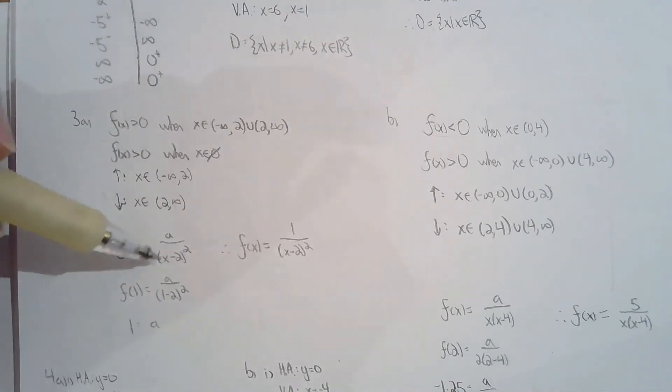Now for this one, 3a, the factor must be squared, because you can see from both sides of the vertical asymptote, the behavior was both going towards positive infinity, which is a clear indication that the factor was squared.